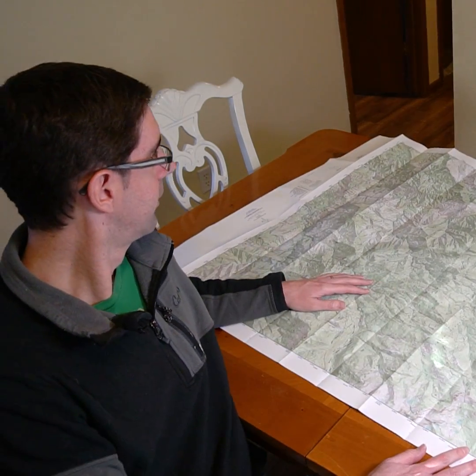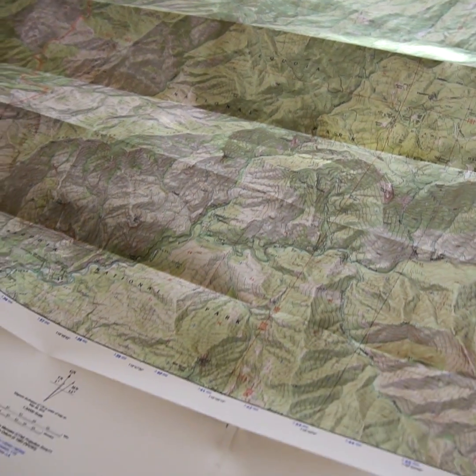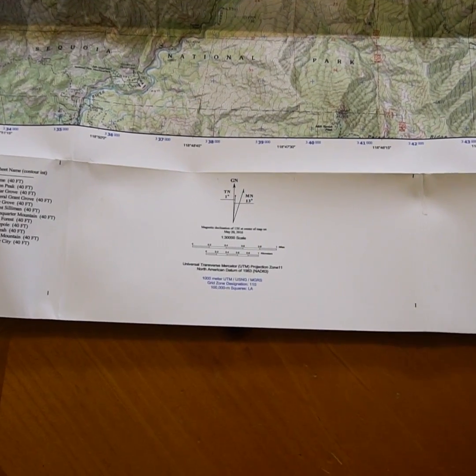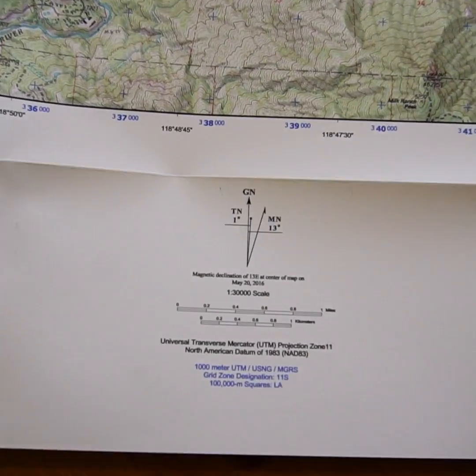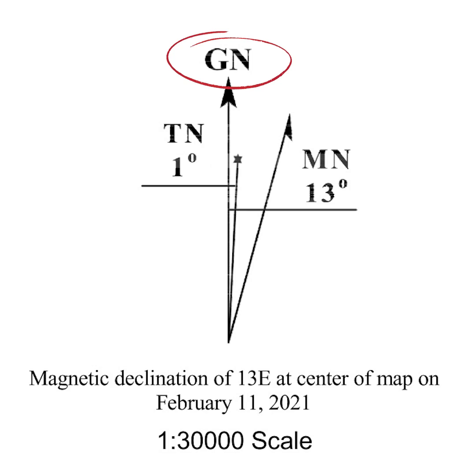This map is in Sequoia National Park. Let's take a look. Here's the north arrow along the edge of the map. Right at the top you'll see the letters GN, which stand for grid north. MyTopo maps are lined with UTM grid north, which is slightly different than true north.